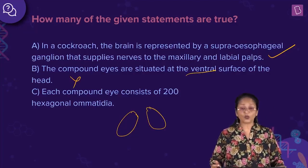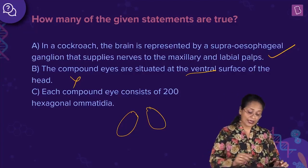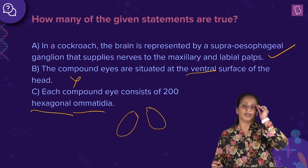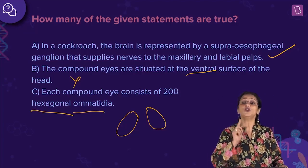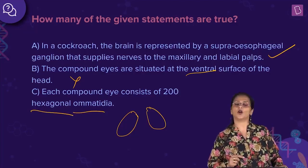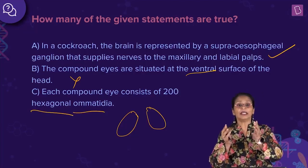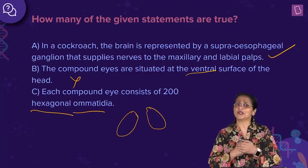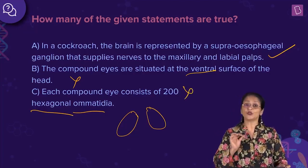The third statement: each compound eye consists of 200 hexagonal ommatidia. The shape hexagonal is right, ommatidia is also right. However, the compound eye of cockroach has almost 2000, not 200, hexagonal ommatidia — singular is ommatidium. The images captured form a mosaic image of low resolution. So this is incorrect. How many statements are true? Only one.